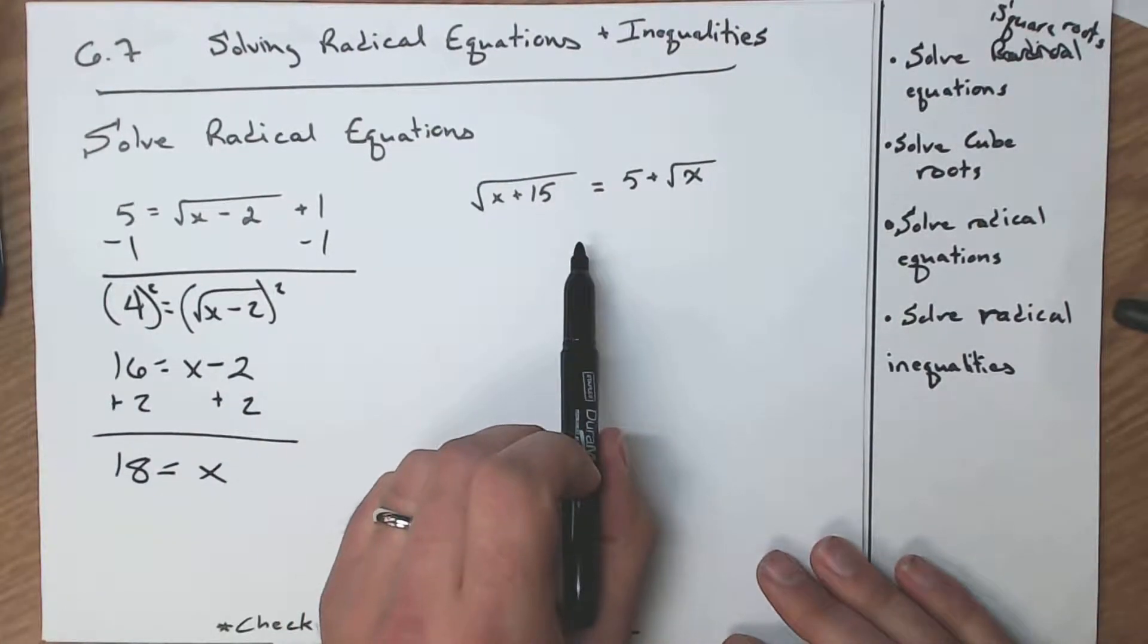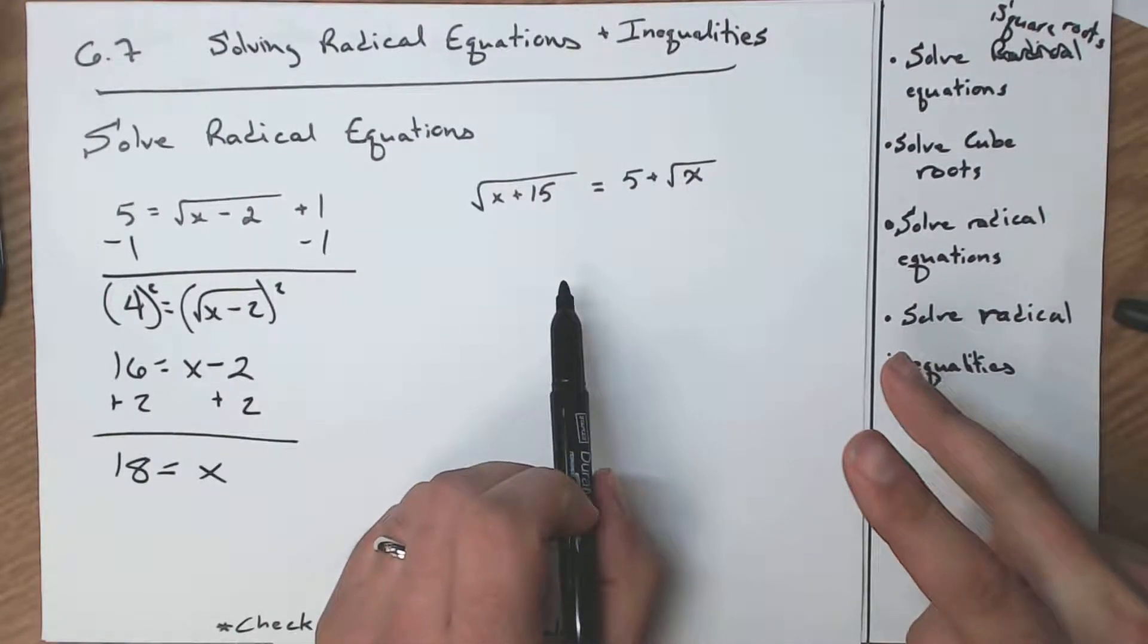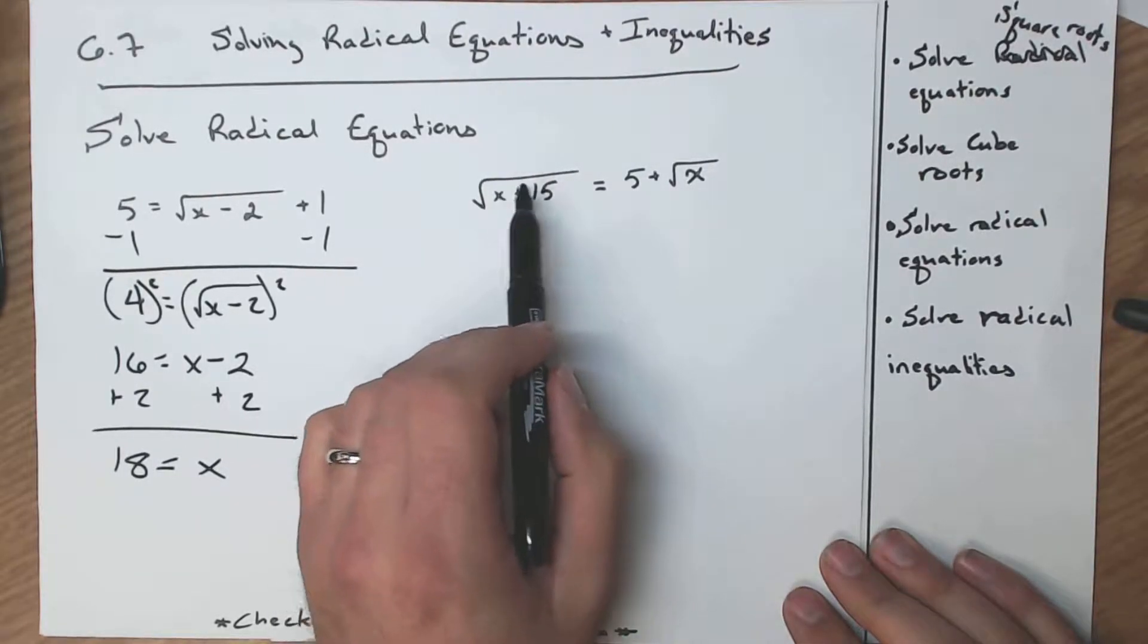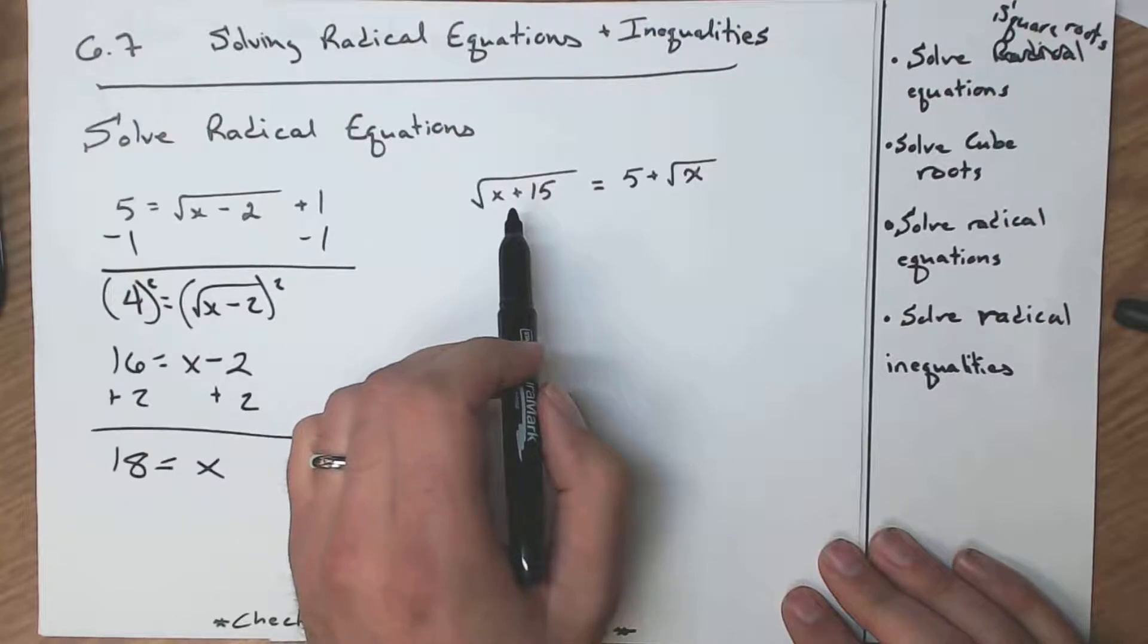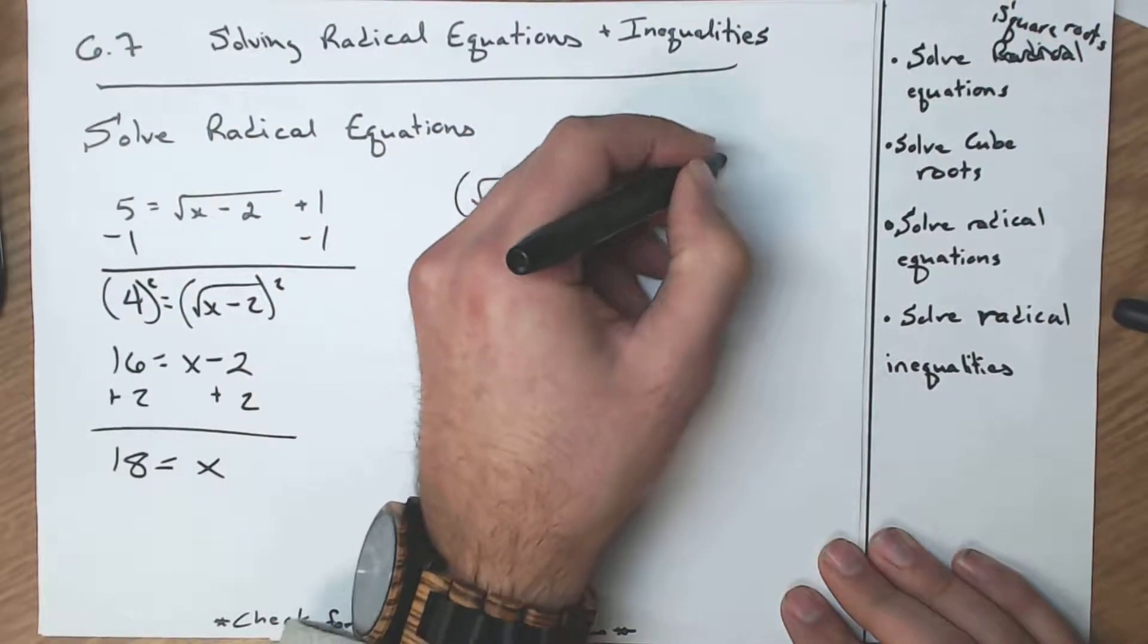Now we're going to do the same thing over here on the right, except we have two square roots. We have one on the left side and one on the right. The one on the left is all by itself. There's nothing extra there. I would agree, or I hope you would agree, that this is the most complicated of both square roots. So I like that it is by itself. So I'm going to square both sides.